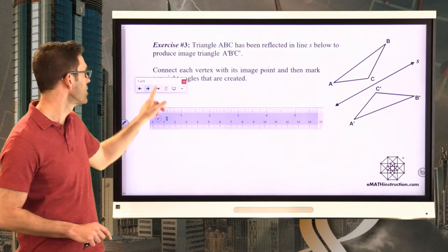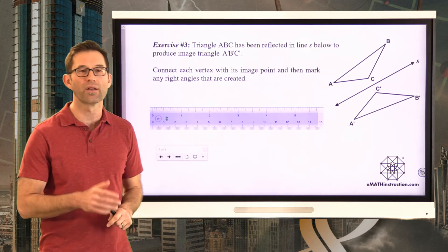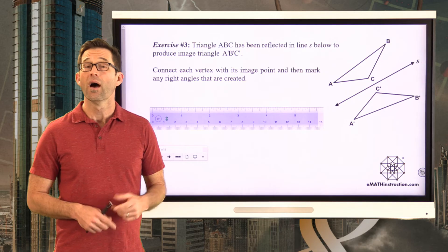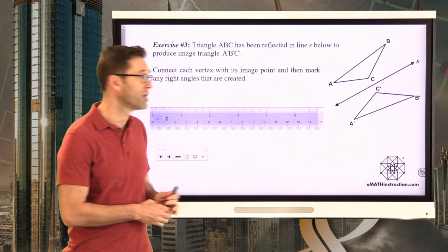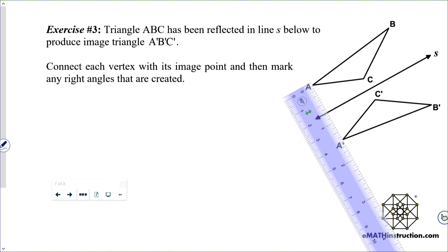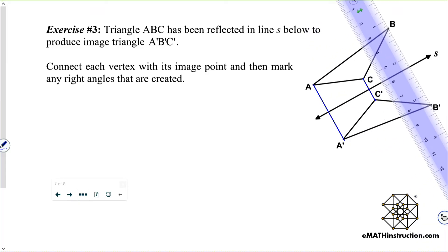Exercise number three: triangle ABC has been reflected in line S to produce image triangle A prime, B prime, C prime. Connect each vertex with its image point and mark any right angles created. Connect A to A prime, C to C prime, and B to B prime using a straight edge.